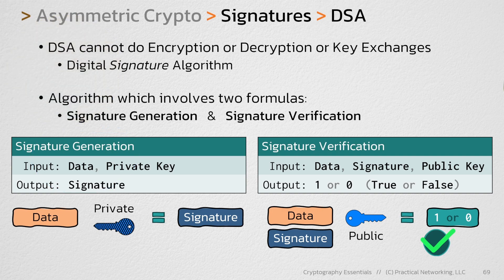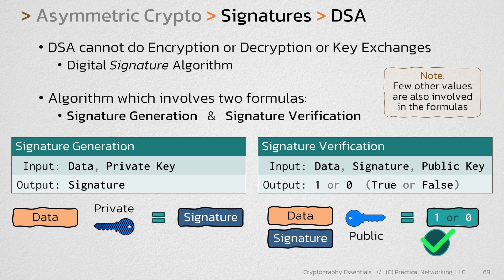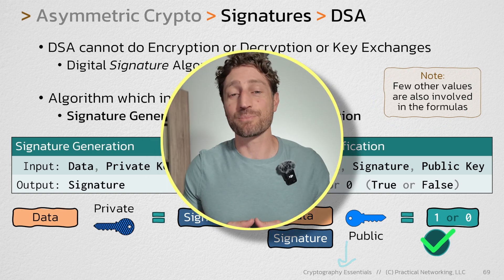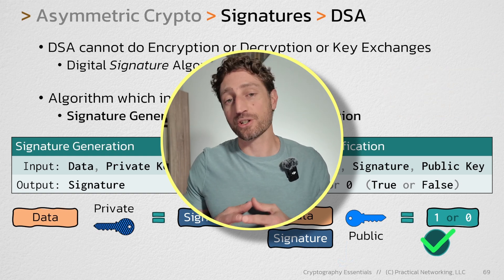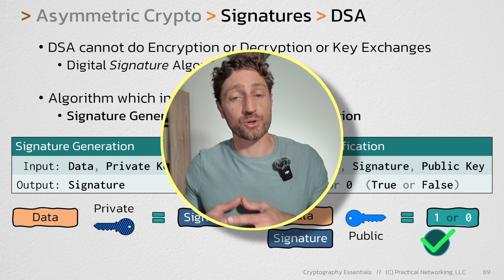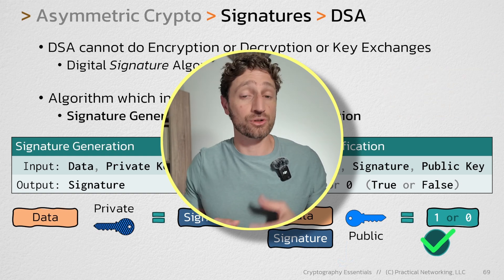This is a bit of a simplification — there are some other values involved in DSA, and the math gets pretty complex, so those details aren't covered in this cryptography essentials course. The main takeaway is understanding that DSA is another algorithm you can use to generate and verify signatures. Thanks for watching, and I'll see you in the next one.